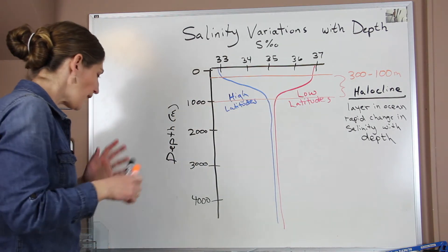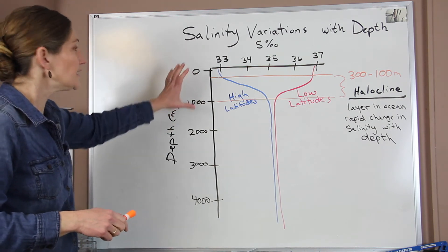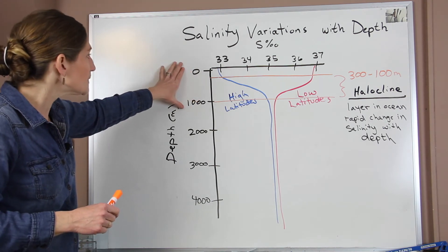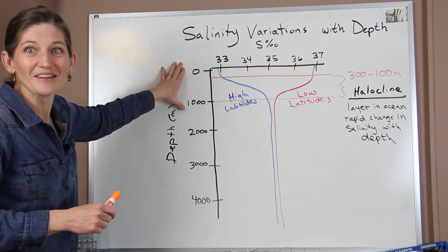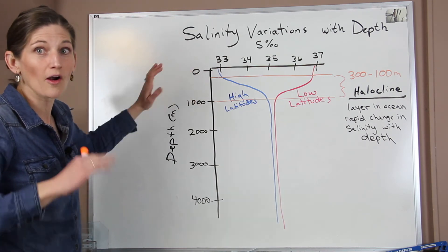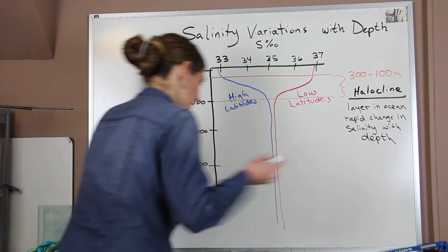So again, what this helps us see is that the changes in salinity are really up in the top layer of our ocean. So it's between zero and a thousand meters below the surface. So salinity, the changes that we're seeing are all driven by those surface processes.